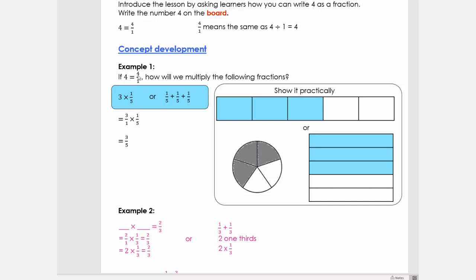Let's look at concept development. If 4 equals 4 over 1, how will we multiply the following fractions? We have 3 multiplied by 1/5. We know that multiplication is the same as repeated addition. So 3 multiplied by 1/5 means the same as 1/5 plus 1/5 plus 1/5, and we can show it on a diagram. We're going to say 3 over 1 multiplied by 1/5. We multiply the denominators: 3 times 1 gives 3, and the numerators 1 times 5 gives 5.